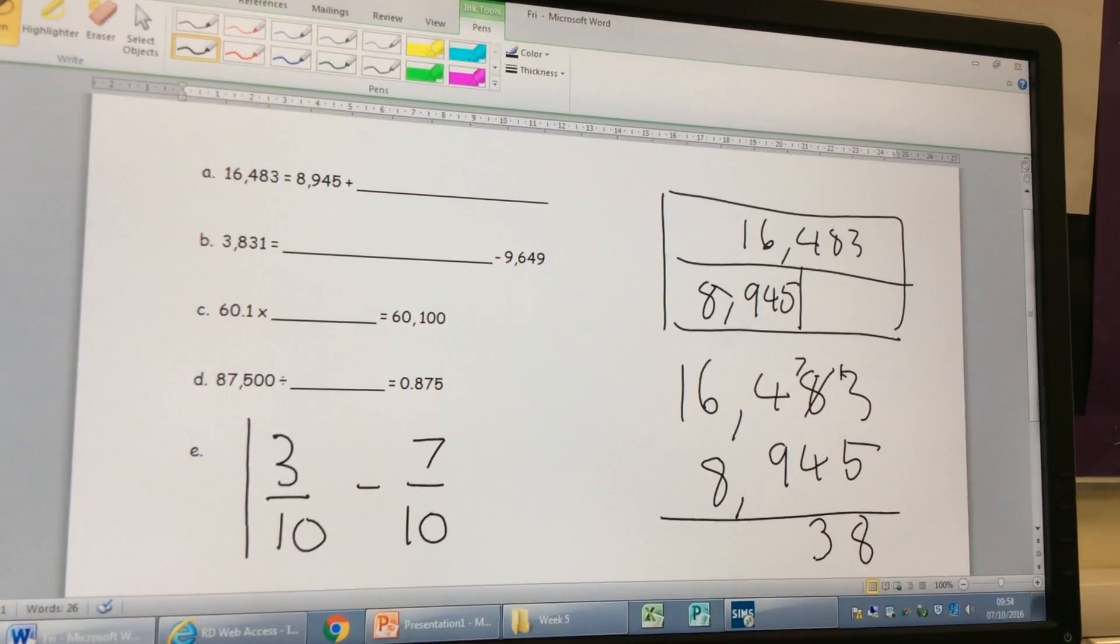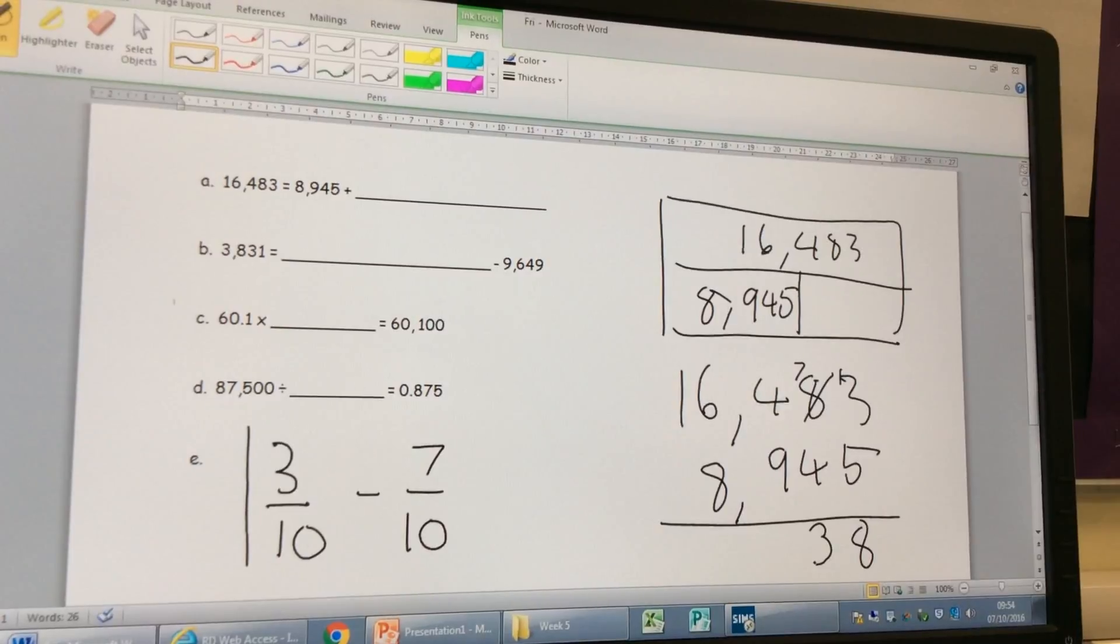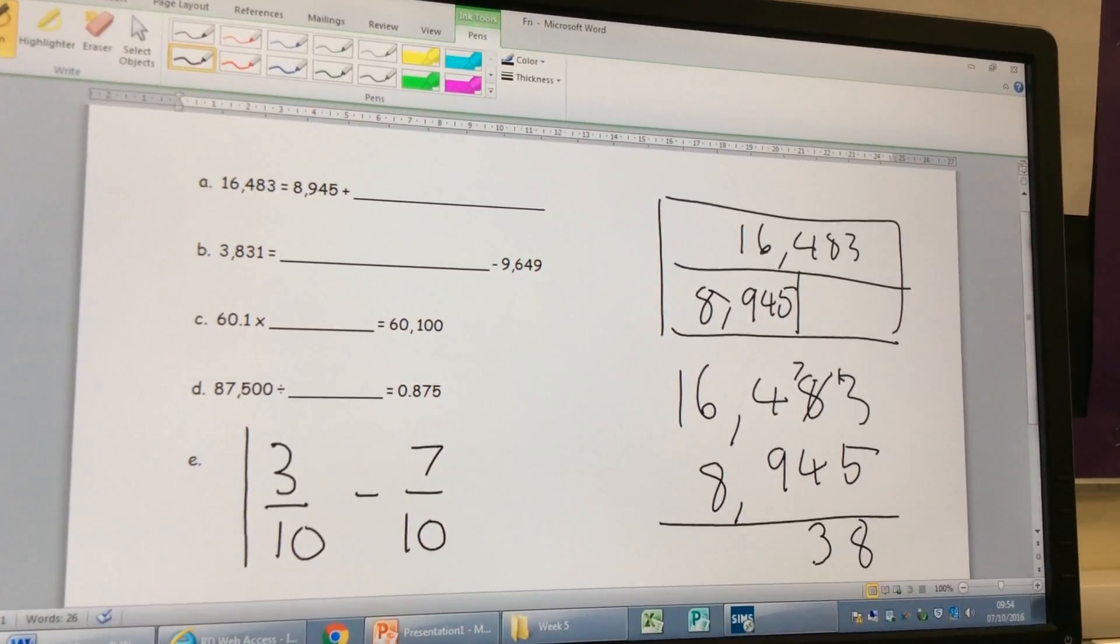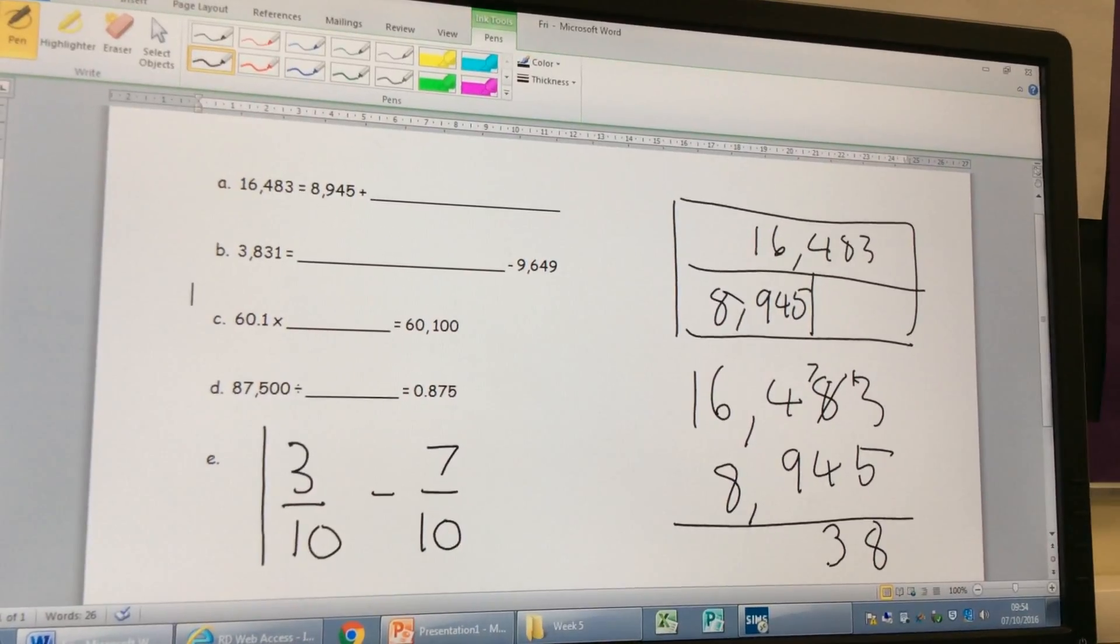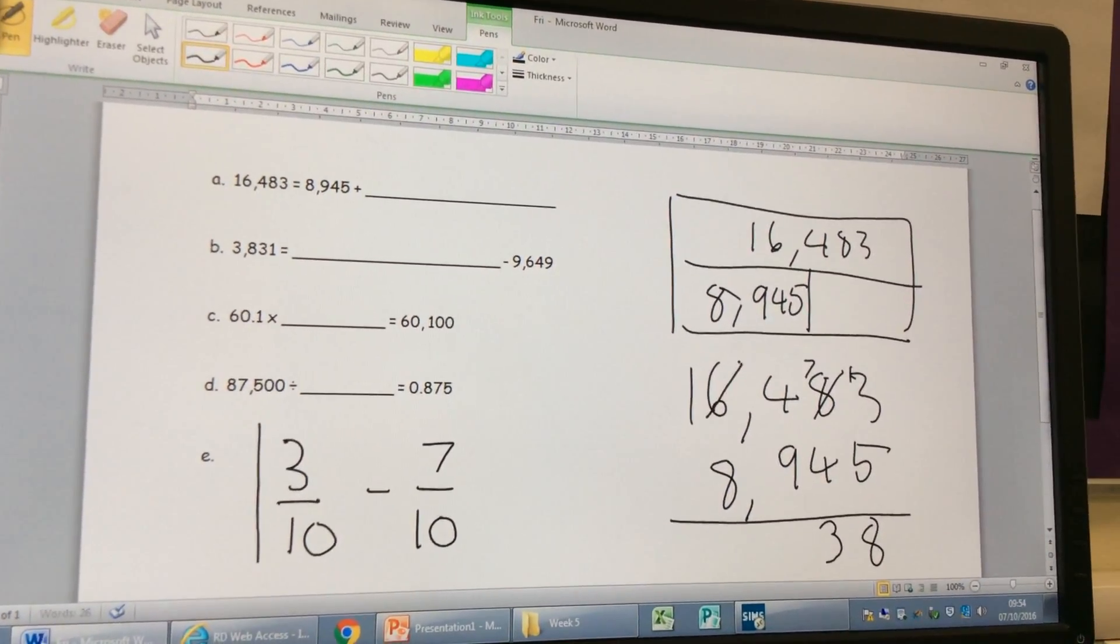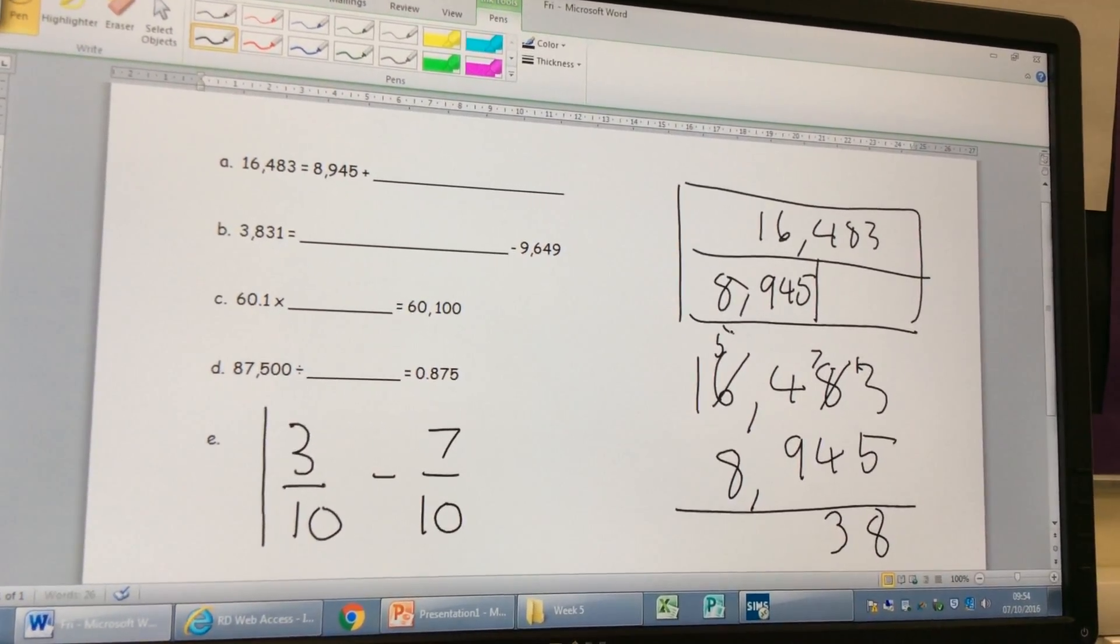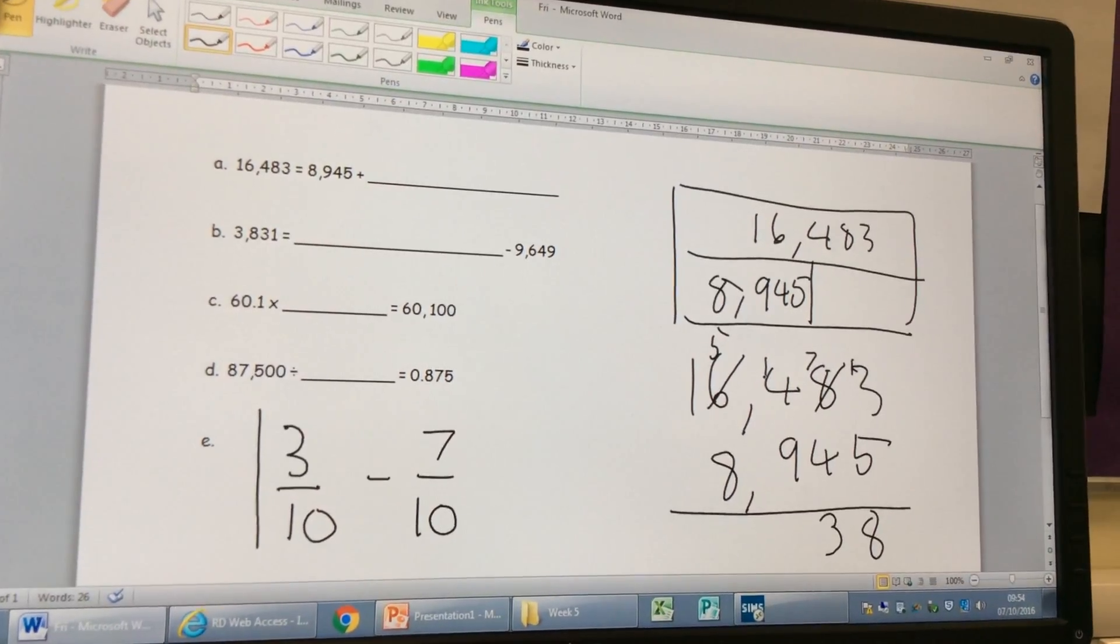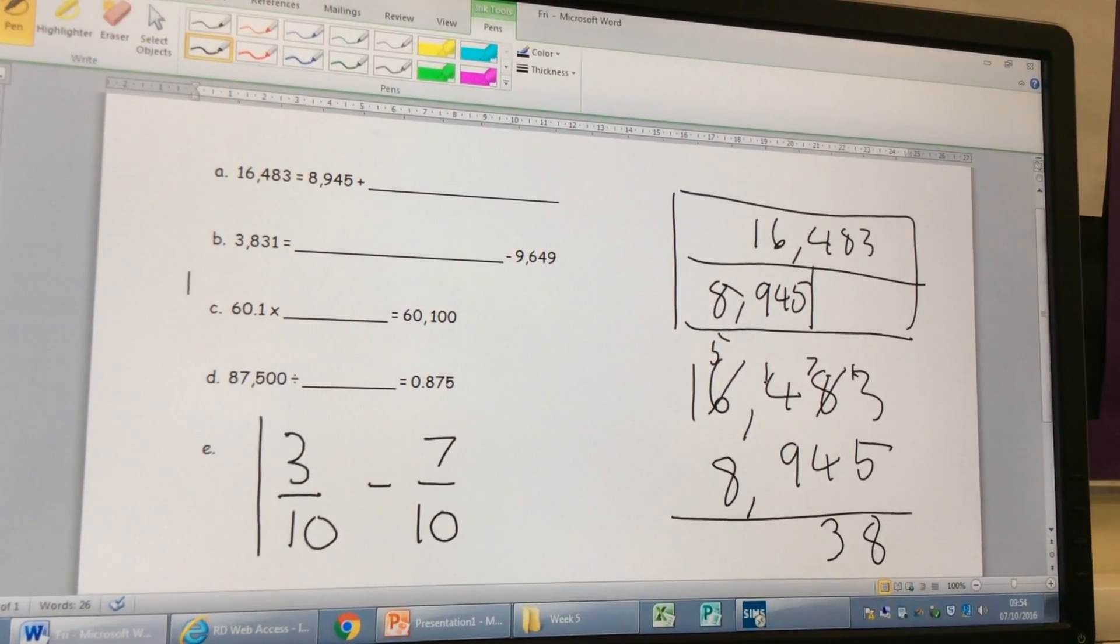Can I just ask you Matthew, it's not 4 and 9, what column are these digits in? Oh, 100. Yeah, so it's 400 takeaway 900, but we can't do that, so what are we going to exchange? The 6,000. Brilliant. To a 5,000, and then we need to add another 1 onto the 4 to make it 14. Takeaway 9, it's 5. Yeah, 5.